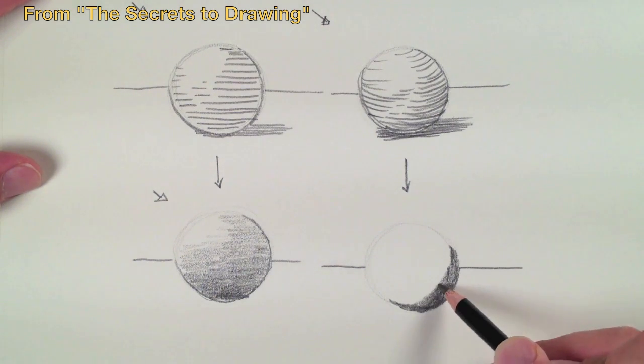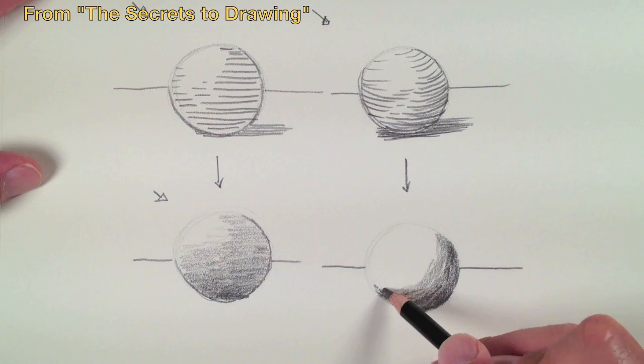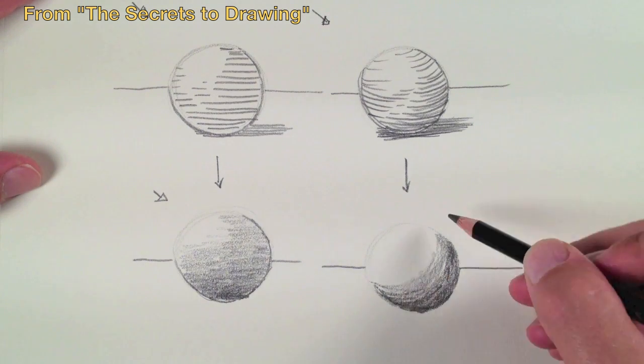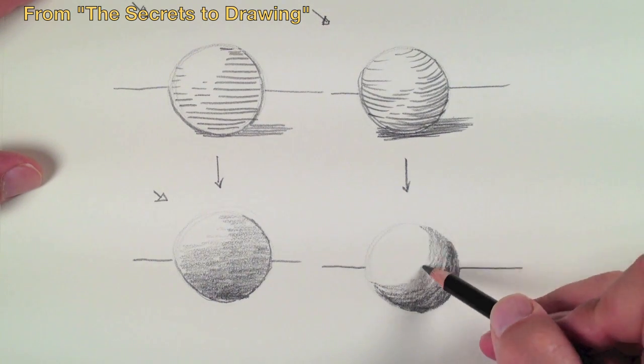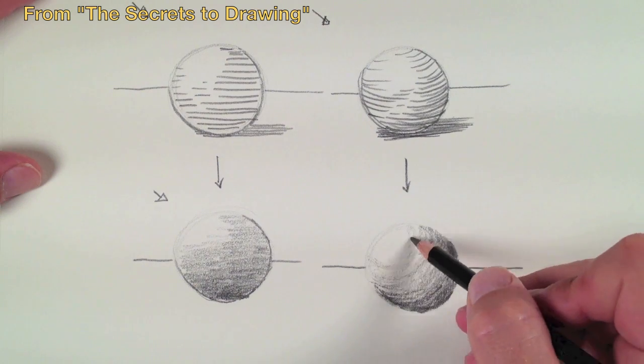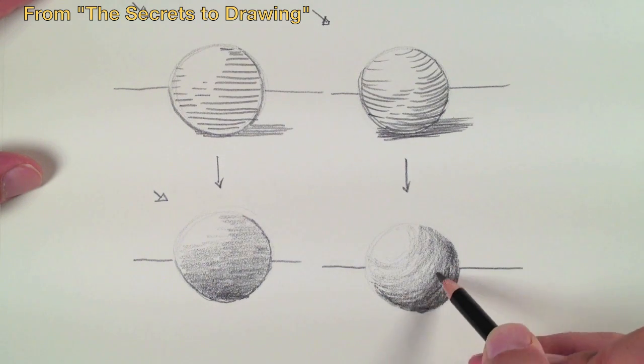Remember, drawing is the creation of an illusion. We're creating the illusion of a three-dimensional object on a two-dimensional surface, so we need to use everything in our power to create that illusion. Using cross contour lines will go a long way in creating that illusion of form for you.